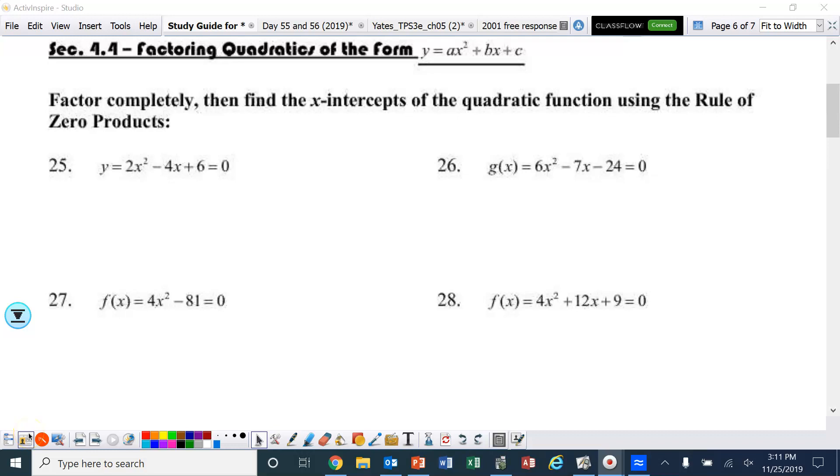All right, ladies and gentlemen, section 4.4, factoring quadratics of the form y equals ax squared plus bx plus c. So that would indicate that the a value is not going to be equal to one. So we're going to have just a little bit more work here. All right, here we go.